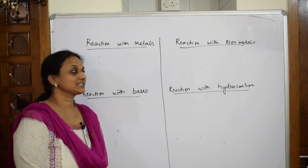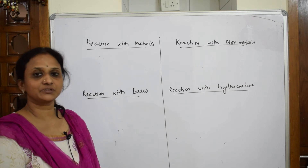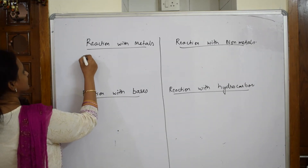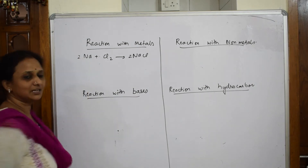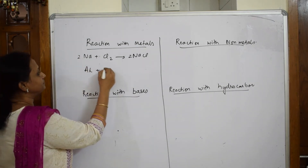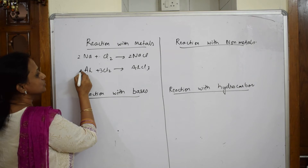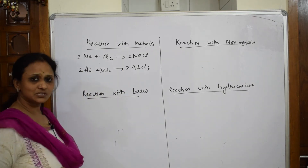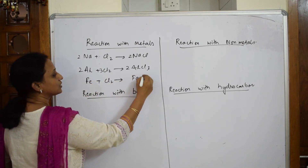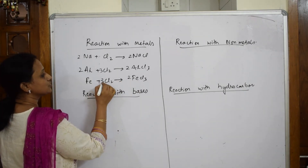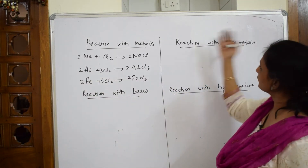Now let's see the general reactions of chlorine. Reaction with metals: sodium plus Cl₂ gives 2NaCl. Aluminium reacts to form aluminium chloride — 2Al + 3Cl₂ → 2AlCl₃. Iron reacts with chlorine to form ferric chloride — 2Fe + 3Cl₂ → 2FeCl₃. You are simply forming the salt; nothing to memorize.